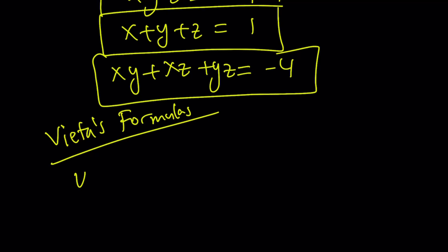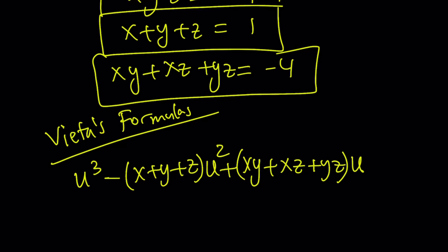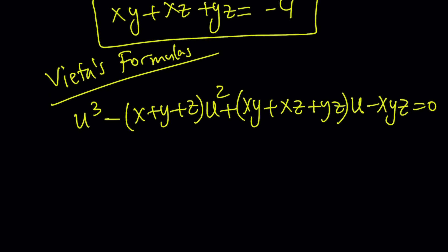So it's going to look like this. Suppose we use u as a variable. So it's going to be like u cubed minus x plus y plus z u, and then plus x, y plus x, z plus y, z. By the way, that's not a u. That's a u squared. I messed up on that one. So this is basically the equation whose roots are x, y, and z by Vieta's formulas.